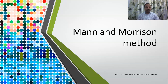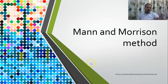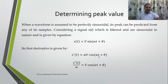We will be looking at the Mann and Morrison method, which is one of the simplest methods generally employed for determining the RMS value of the fundamental components. We have already discussed this in lecture number one. The Mann and Morrison method is also called the sample and pass derivative method, with a little bit of change in the way we calculate the derivative.